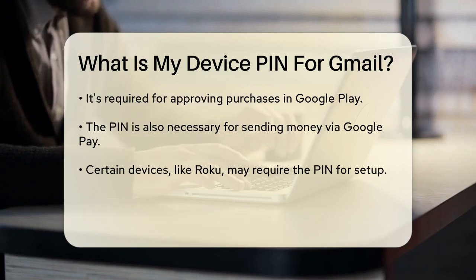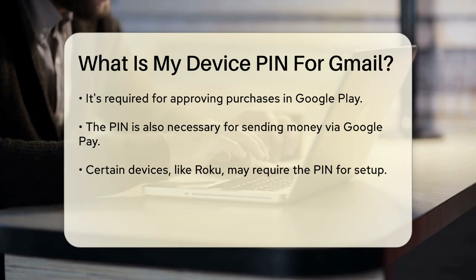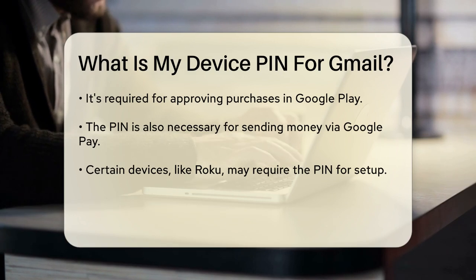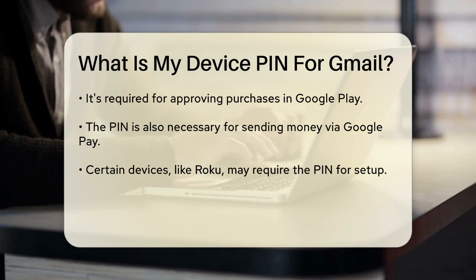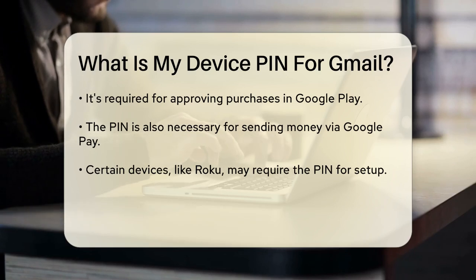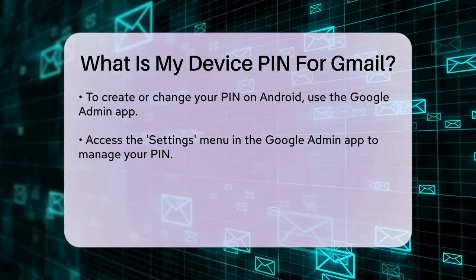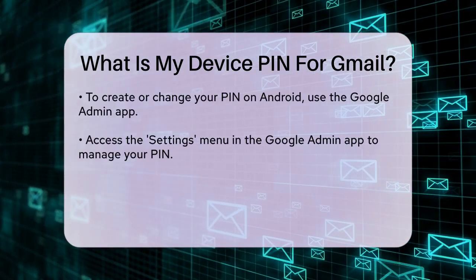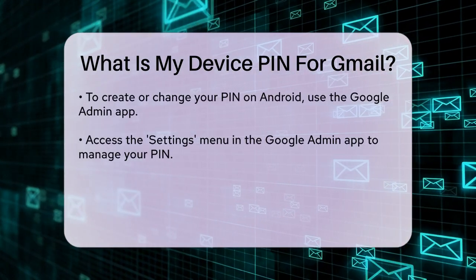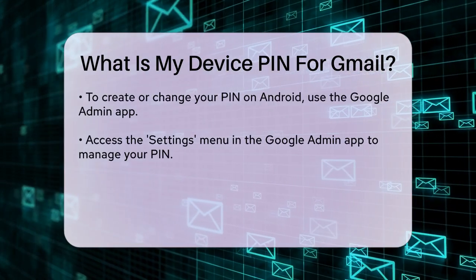To create or change your Google account PIN, you'll need to follow some simple steps. If you're using an Android device, you can manage your PIN through the Google Admin app. Open the Google Admin app, switch to your administrator account if necessary, and go to the Settings menu. From there, you can either set a new PIN or change an existing one. If you've forgotten your PIN, you can tap Forgot PIN and follow the prompts to reset it.